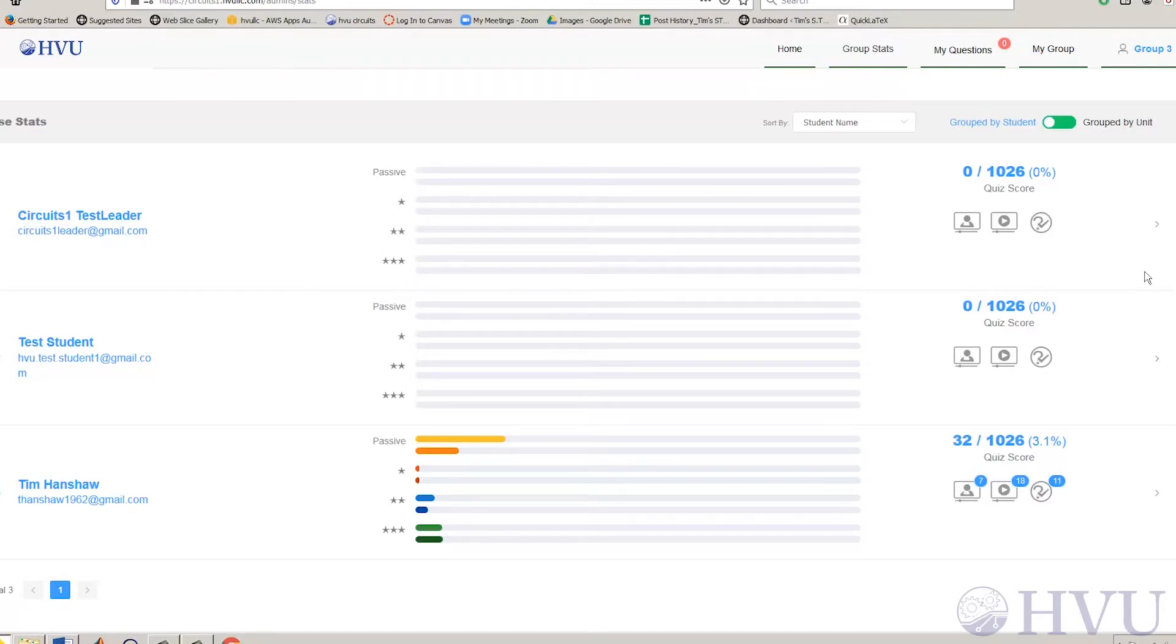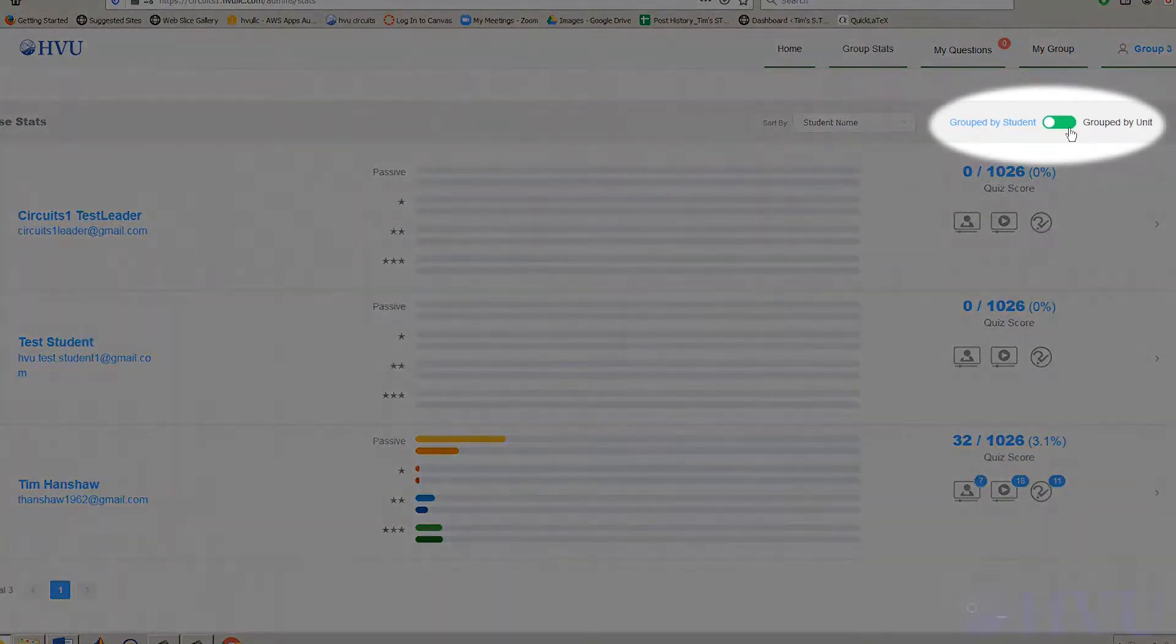I'll talk about the data itself a little later, but first I'll show several different ways of sorting the data. You can use this toggle to choose to view individual student data or composite data across all students.